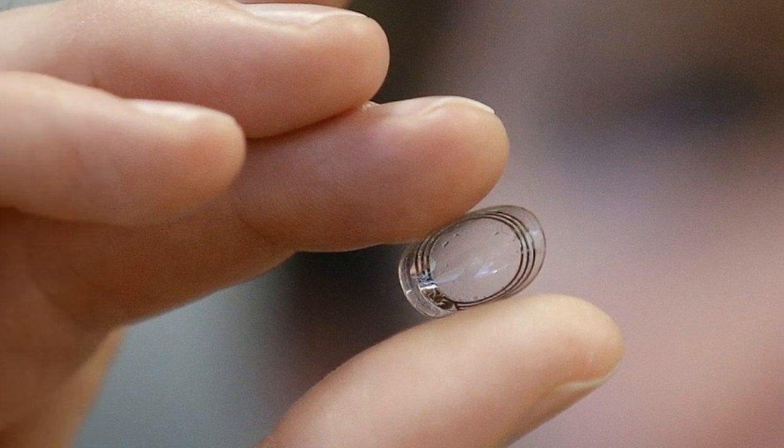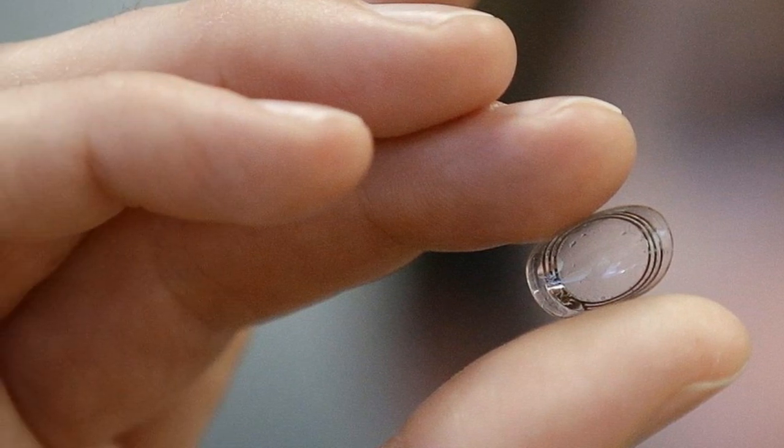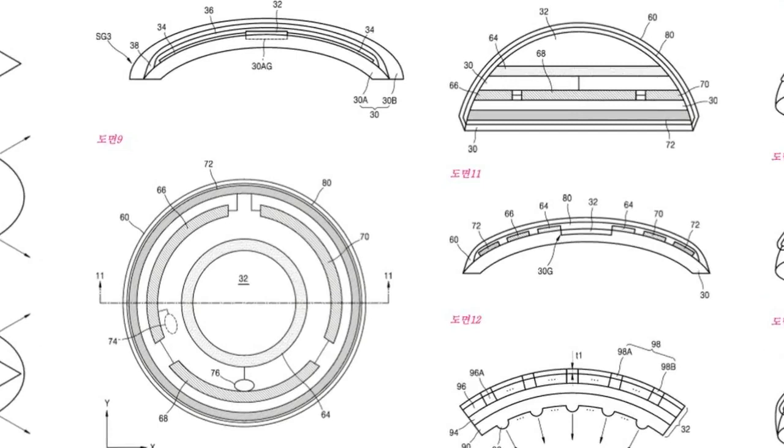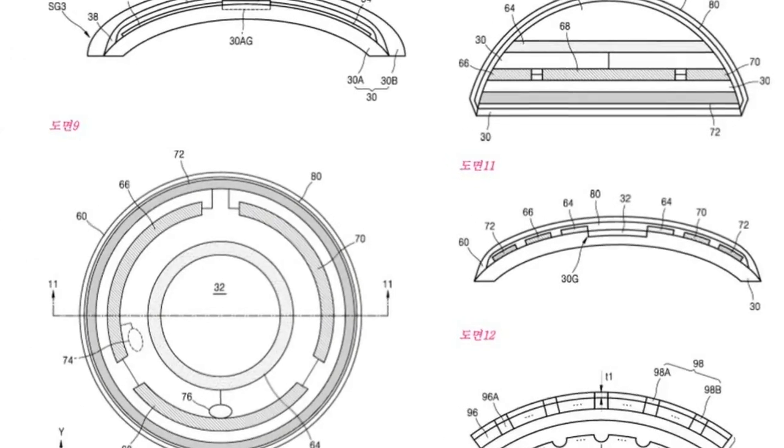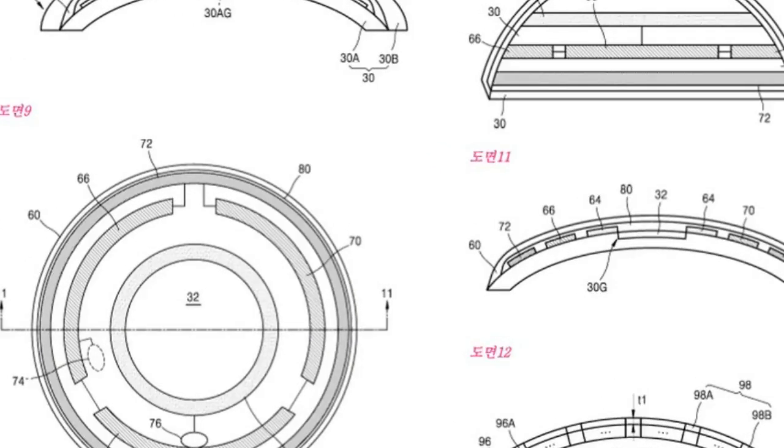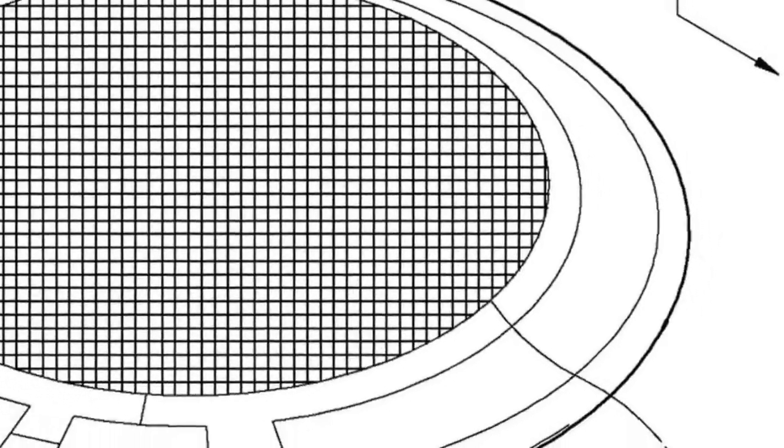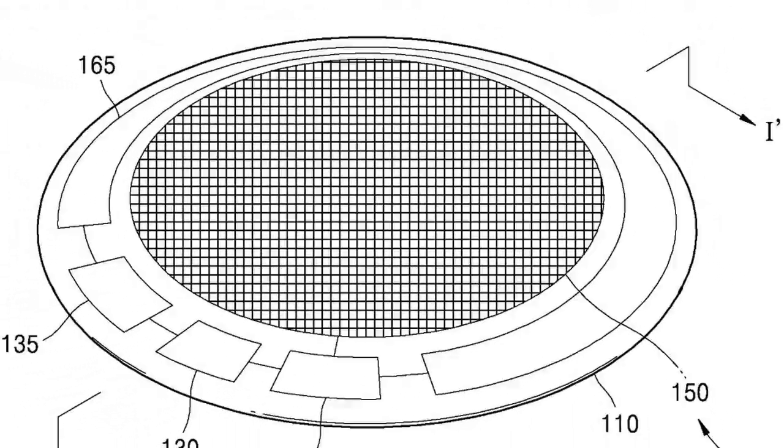An interesting patent has come to light about a lens with built-in camera that would be developed by Samsung. This week, the patent office in South Korea gave Samsung a patent called Method of Manufacture and Operation of Smart Contact Lenses for Augmented Reality.